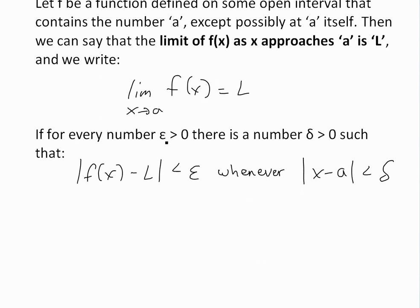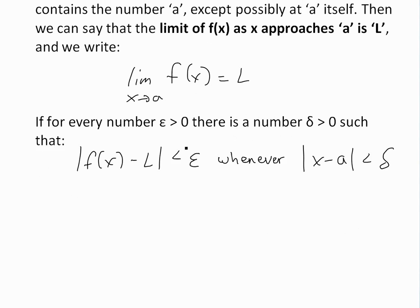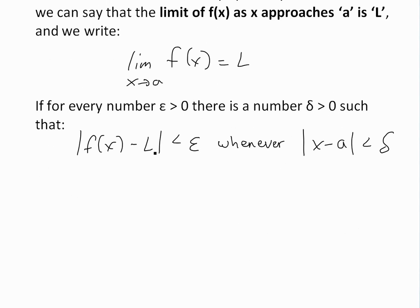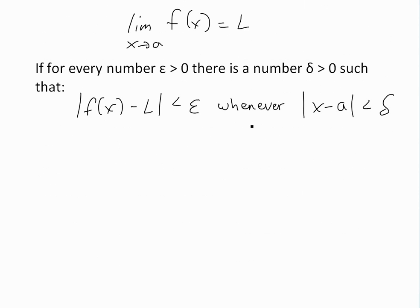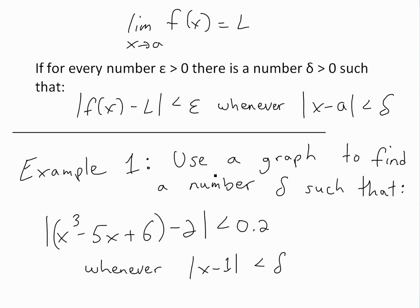If for every number epsilon greater than zero, there is a number delta which is also greater than zero, such that the absolute value of f of x minus L is less than epsilon whenever x minus a is less than delta. To help illustrate this, I'll go through an example. You can also watch the other video linked below to get a better graphical idea of what epsilon and delta are.